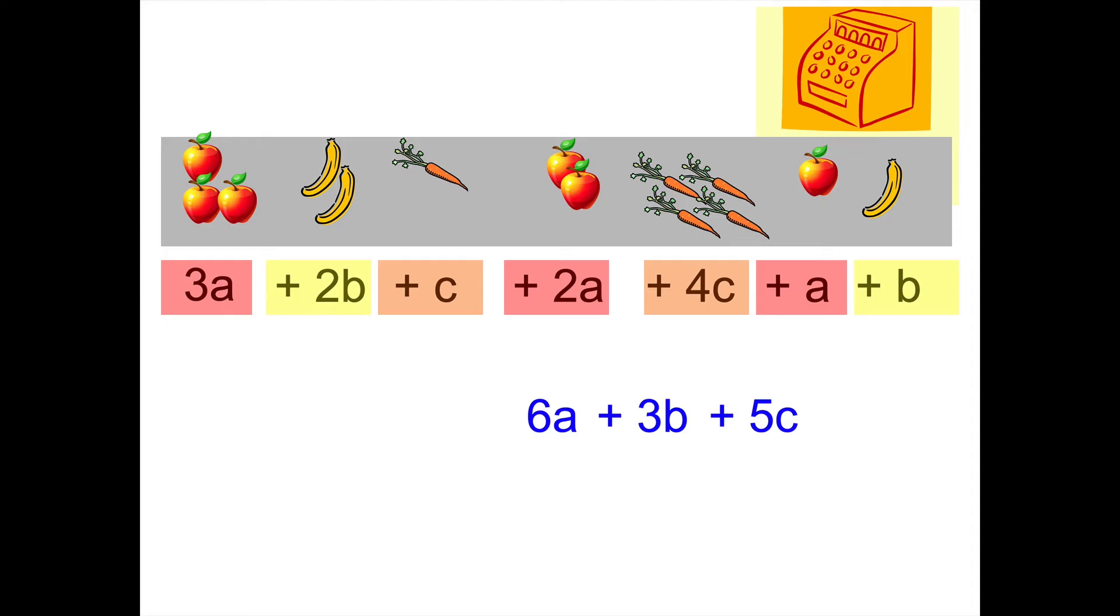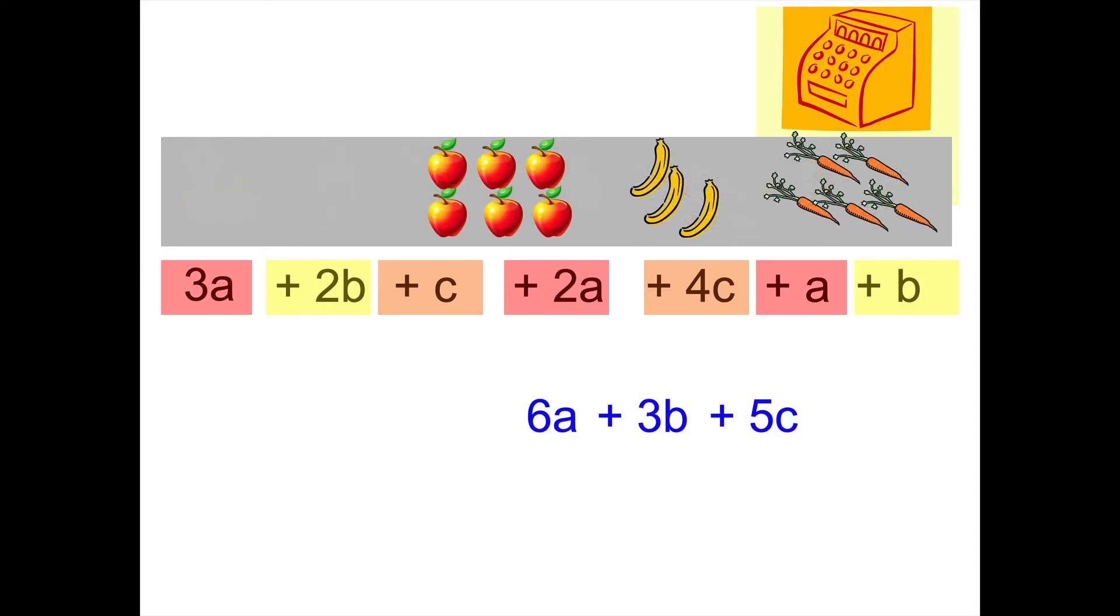All right, and so if I were to simplify this, if I were to group my produce together, I don't want one giant pile of apples, bananas, and carrots. I want three piles: one for apples, one for bananas, one for carrots. And the same goes for my algebraic expression. I don't want one giant, what would it be? 14abc. No, I want 6a plus 3b plus 5c as three separate groups. And these are called terms, and this is simplifying an algebraic expression.